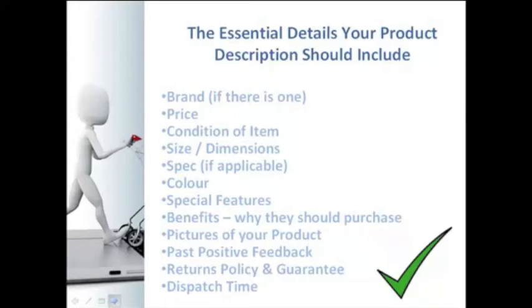Special features and benefits are very important, and this is where you need to be convincing and persuade the buyer that this is the best product and they should purchase now. Always list special features and benefits as bullet points because they're very easy to read, and a potential buyer can look at a glance and see exactly why they should buy this item.